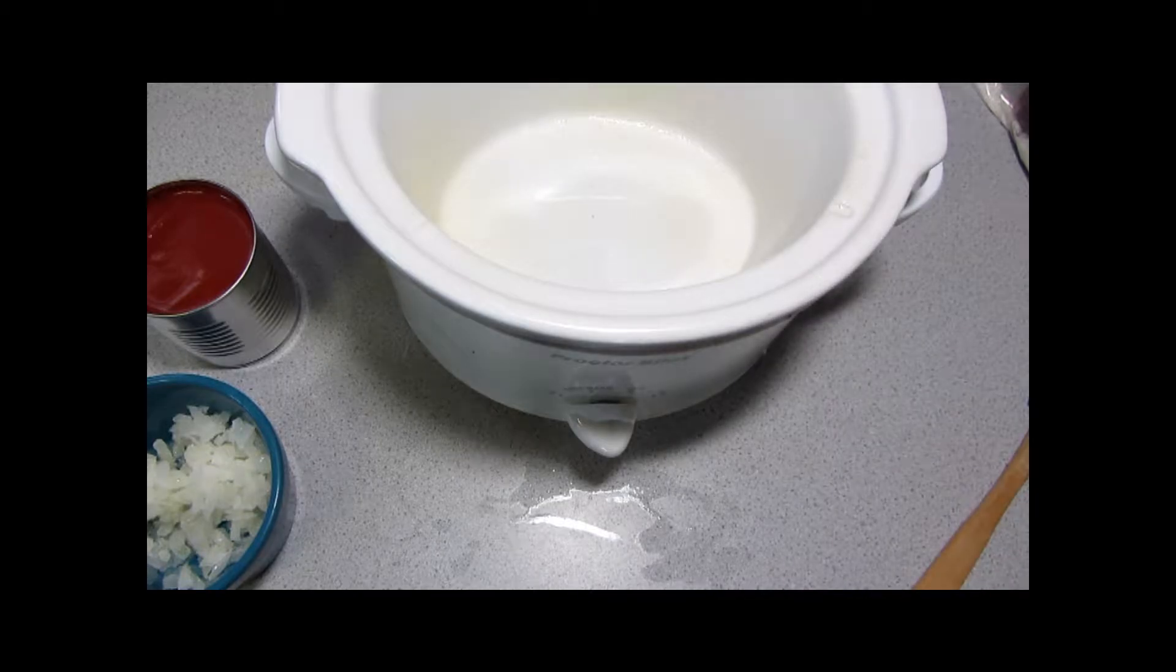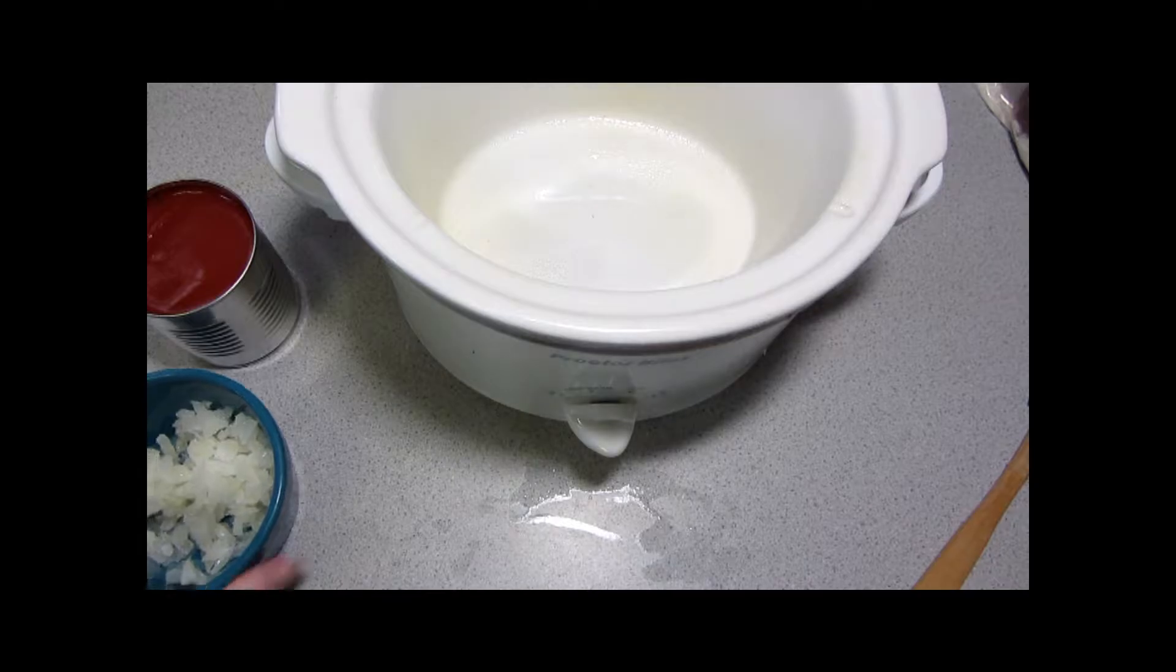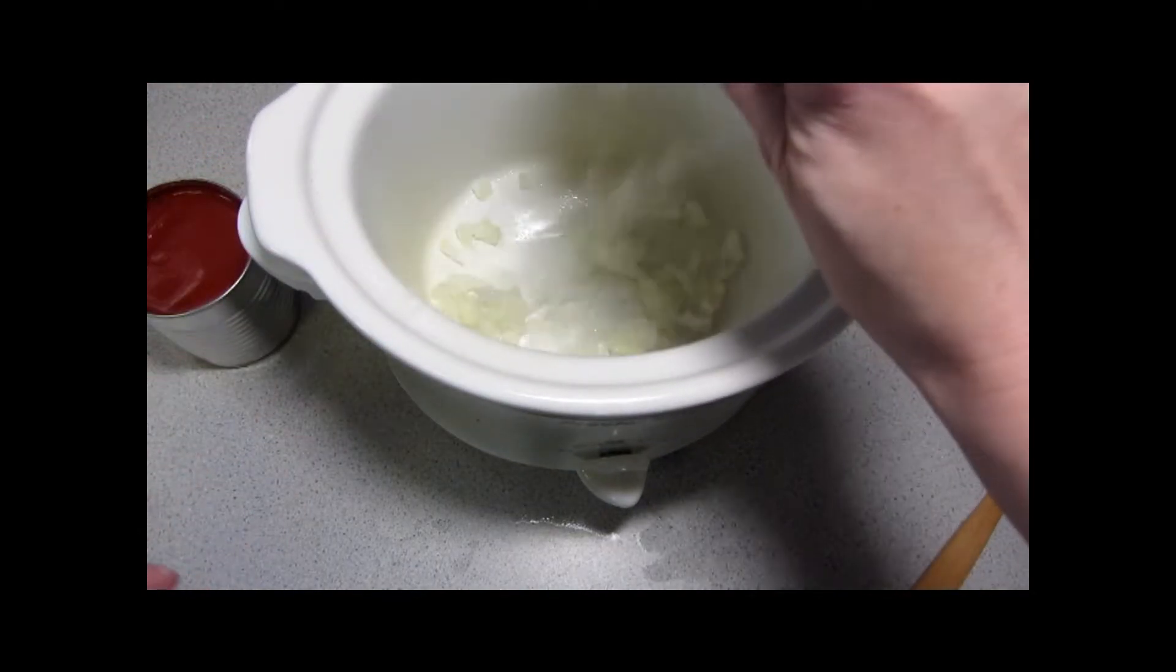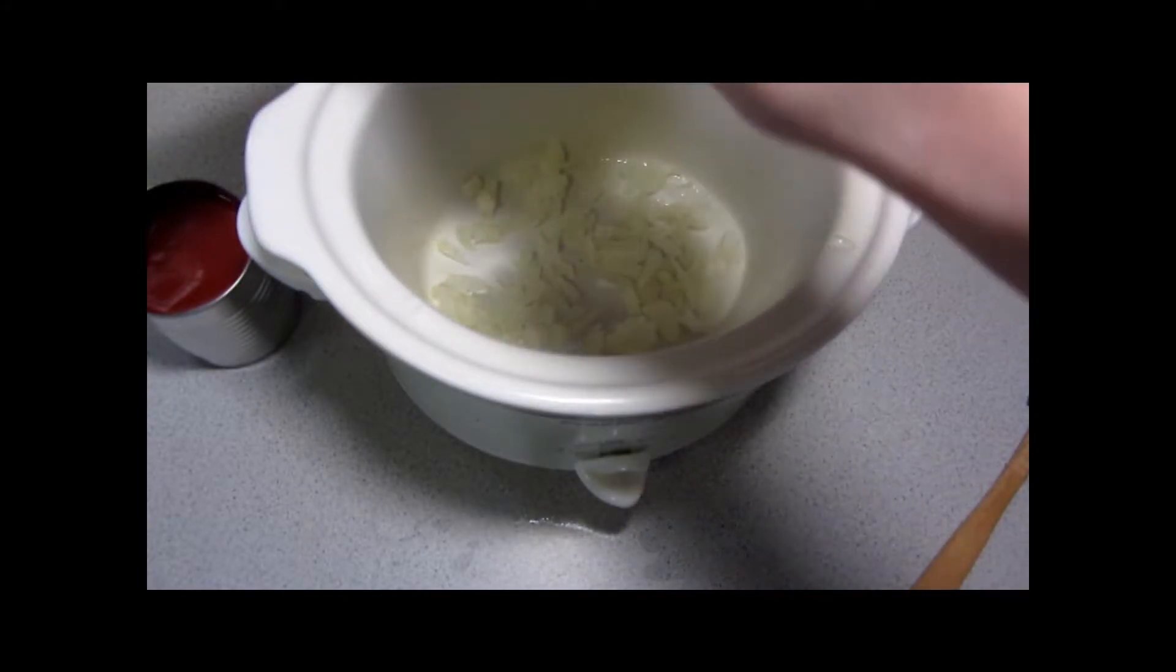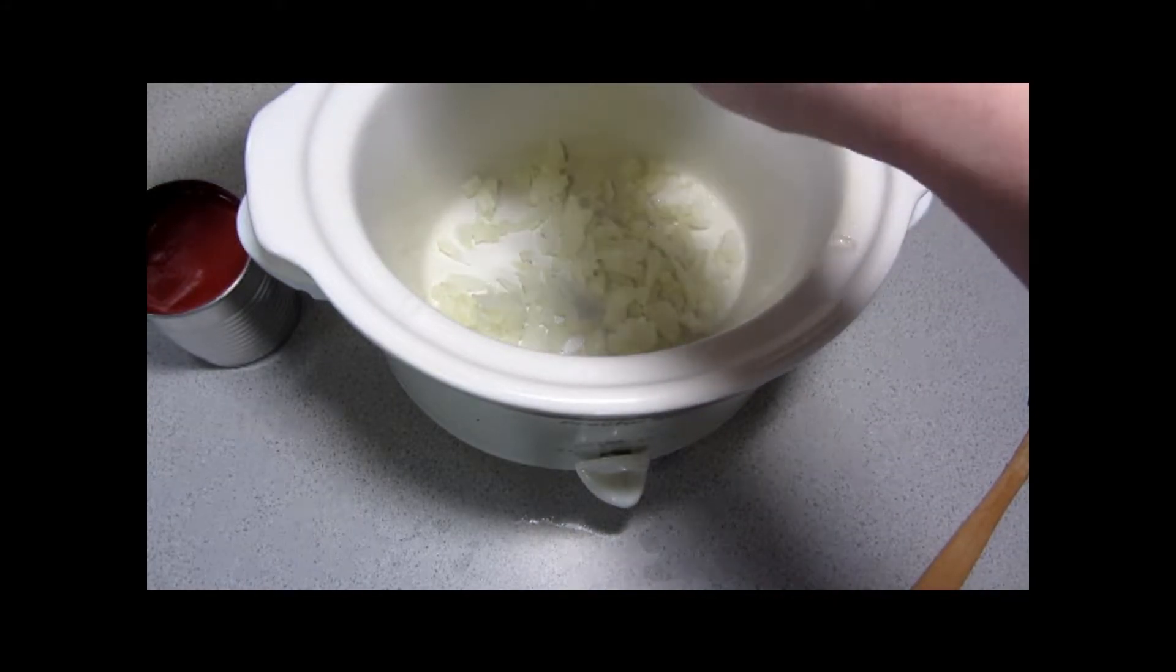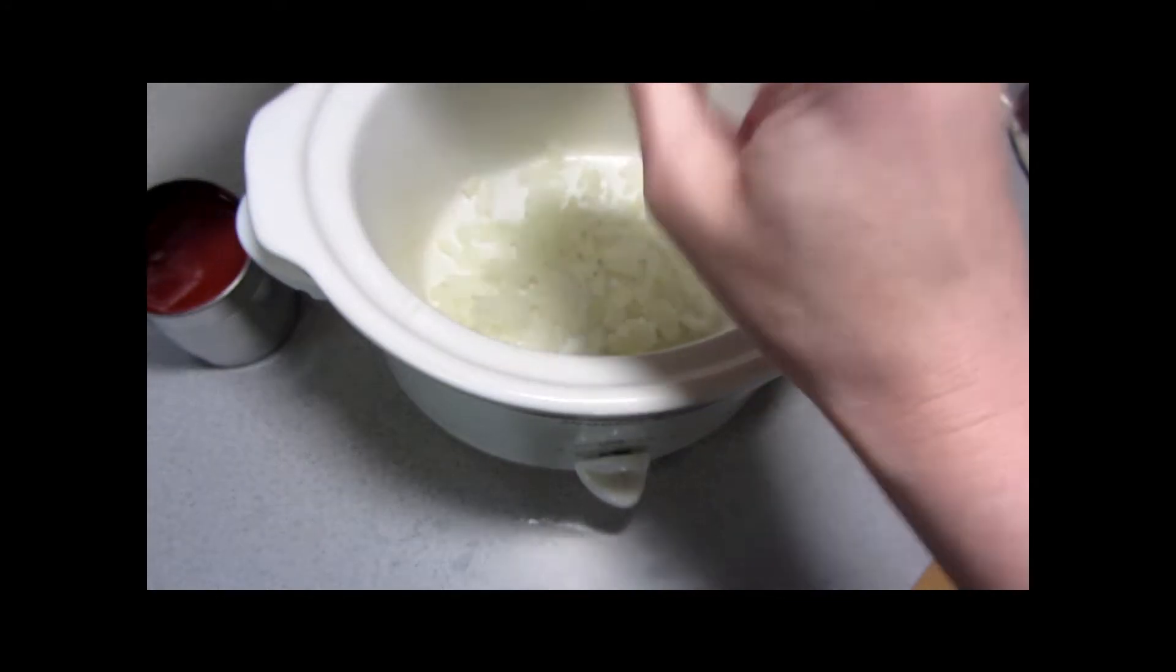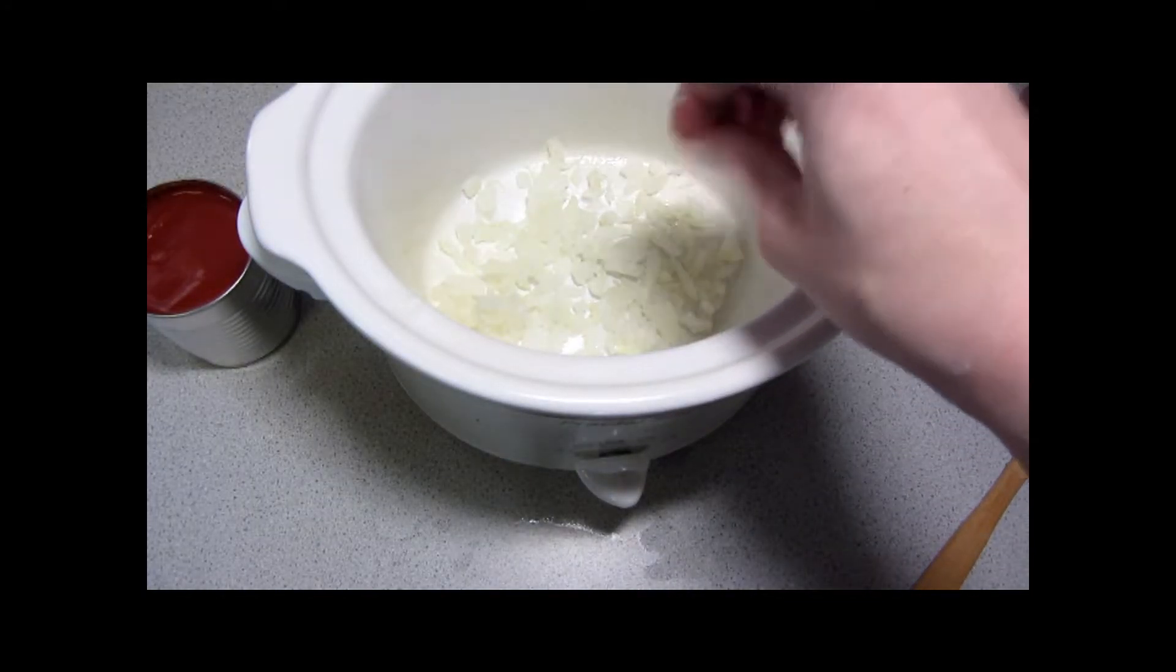Give the inside a little bit of a spritz so things are easier to get out later. For Swiss steak the onion really ought to be sliced and not diced, but I had diced onion in the house, so instead of buying a whole other onion I'm just going to use the diced.